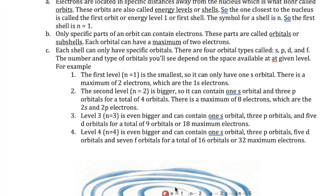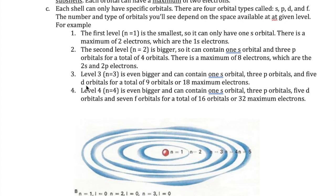Only specific parts of an orbit can contain electrons. These parts are called orbitals or subshells — orbitals are not orbits. Orbitals represent the general location where an electron can be found in an orbit. Each orbital can have one or two electrons but no more than two. Think of orbitals like an apartment where the landlord limits renters to either one or a maximum of two people.